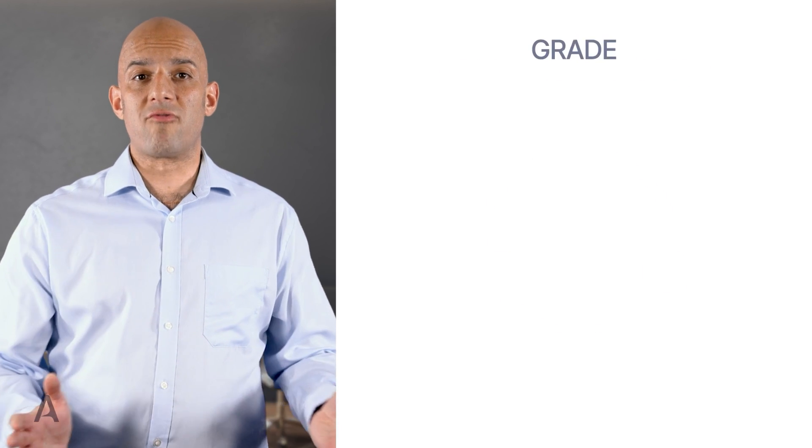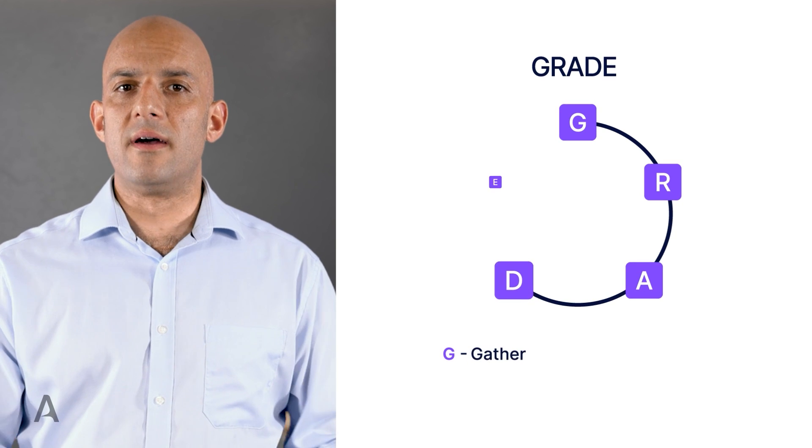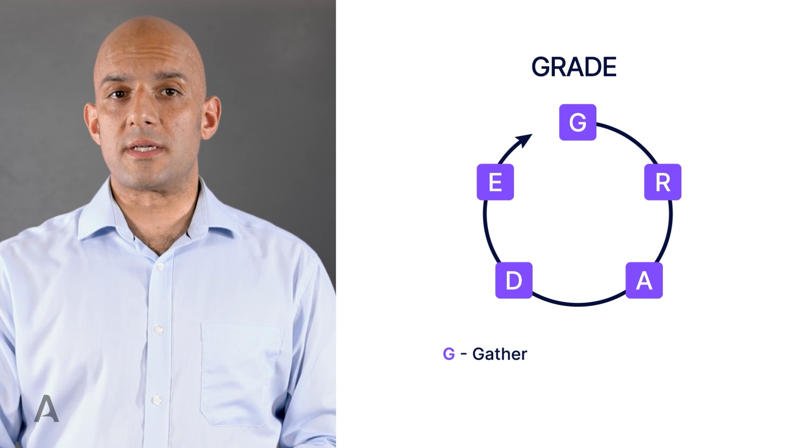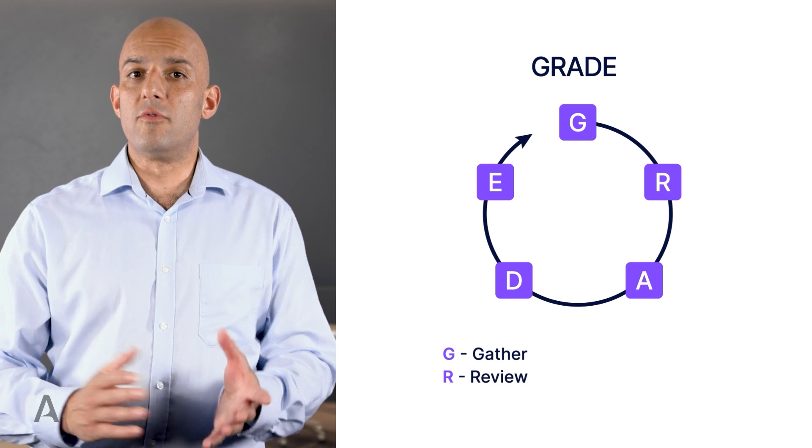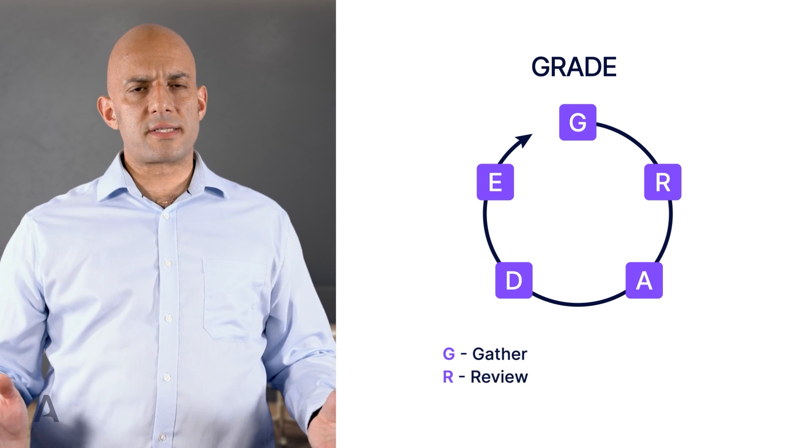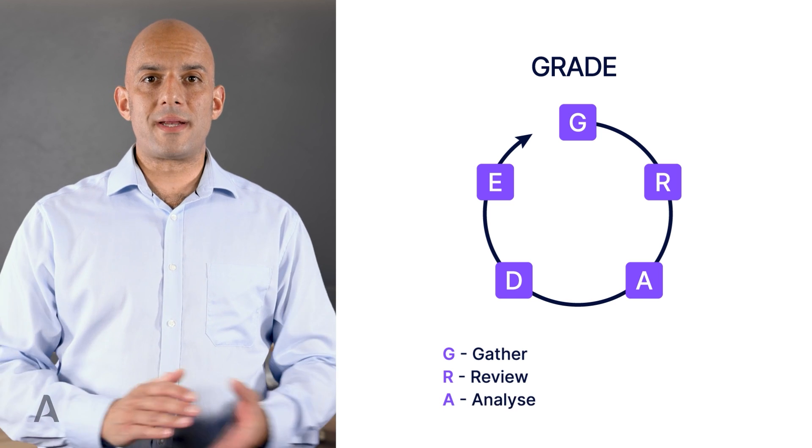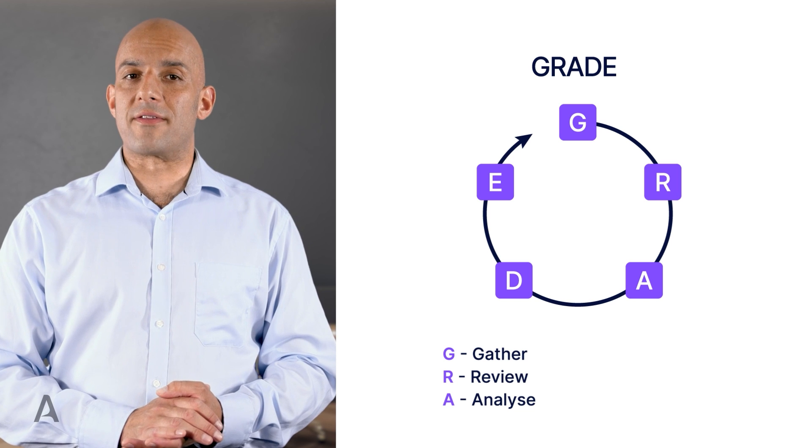Now we will move on to the GRADE model. G, gather. Gather all the information possible from the available resources. R, review. Review the information gathered and prioritize the information. A, analysis. Form an analysis from the information gathered.